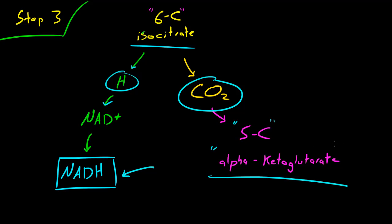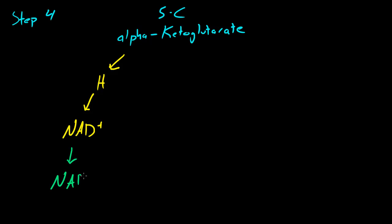So now let's go ahead and take this alpha-ketoglutarate and bring this to step number 4. So step 4, start with alpha-ketoglutarate and remember that this is a 5-carbon molecule. So this is actually going to look pretty familiar because the first thing that it does is it donates a hydrogen to, can you guess it? Yes, another NAD+, and whenever this happens we end up with another NADH.